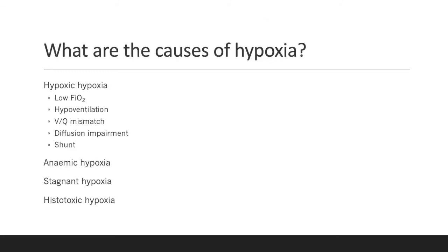What are the causes of hypoxia? Hypoxia can be categorised into four different types. The first is hypoxic hypoxia, which is caused when the partial pressure of oxygen in the alveolus is less than 12 kPa. This can be caused by a low fraction of inspired oxygen, hypoventilation, VQ mismatch, diffusion impairment, and shunt.